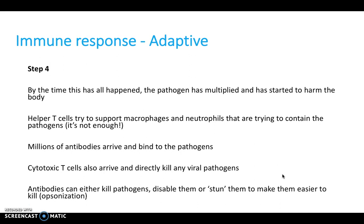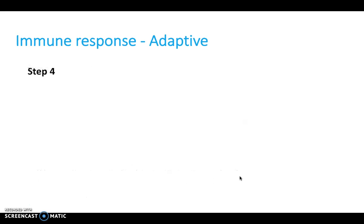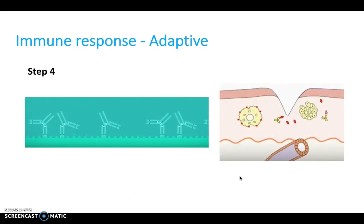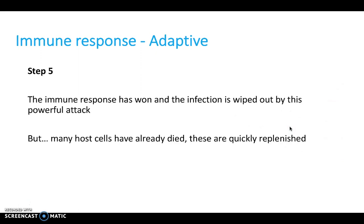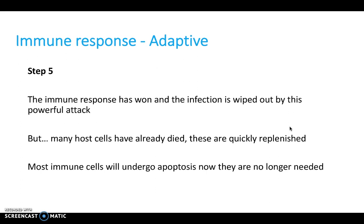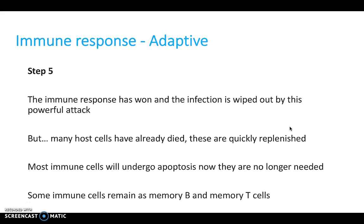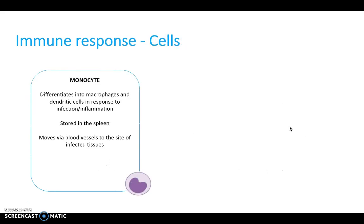Cytotoxic T cells are our biggest killers and they kill any viral pathogens. Antibodies can either kill pathogens, destabilize them, or stun them to make them easier to kill — this process is called opsonization. The immune response wins and the infection is wiped out. Many host cells have already died and are quickly replenished, but most immune cells will undergo apoptosis now they're no longer needed. Some remain as memory B cells and memory T cells for the future.